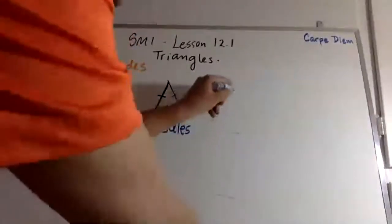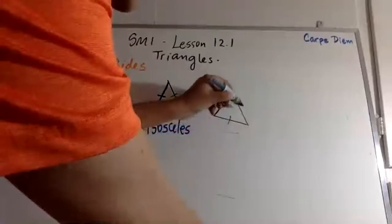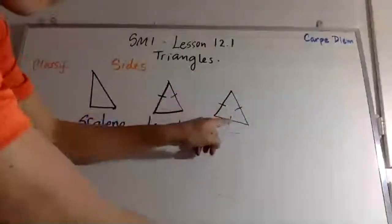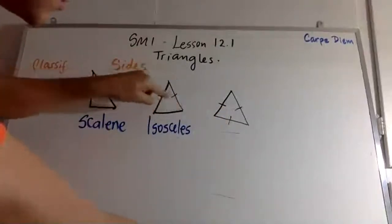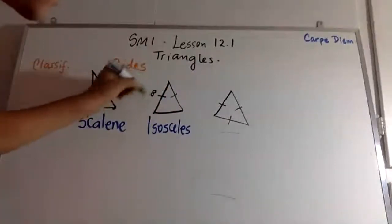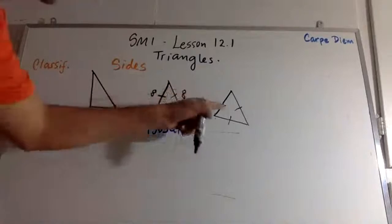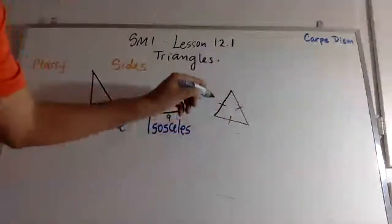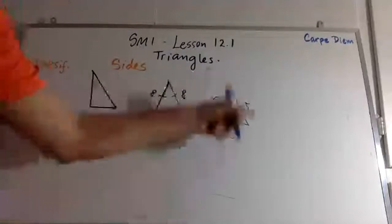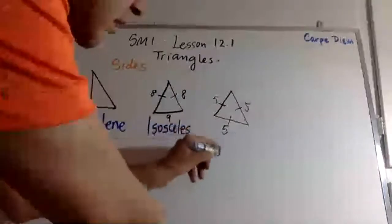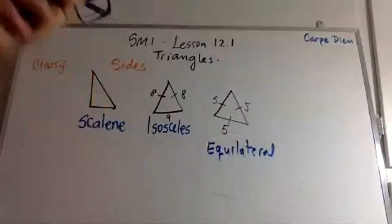When all three sides have the same length, we use tick marks to indicate congruence. For example, if this were eight, then this would also be eight, and this would have a different length. But when all three marks are the same — say all sides are five — that's called equilateral.